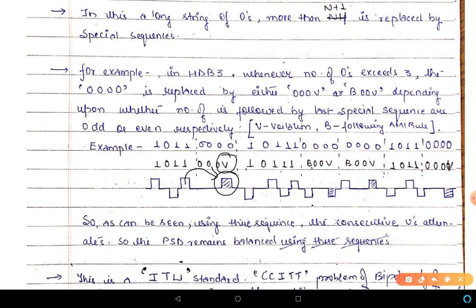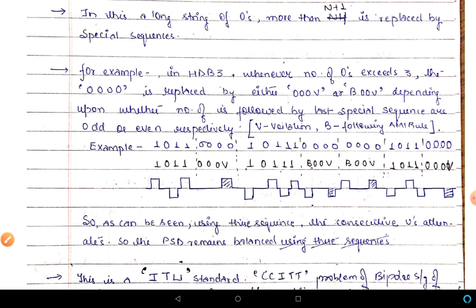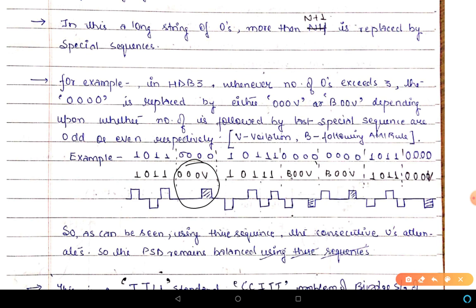'B' means it follows the alternating rule, as can be seen. 'V' means it violates the alternating rule — there is no alternation. This removes the disadvantage of AMI where long strings of zeros caused problems in synchronization due to insufficient transitions. By inserting the special sequence, enough transitions are provided, so clock recovery is possible even when a large number of zeros occur in the transmitted data. This is the biggest advantage of HDB3.